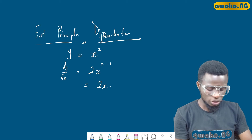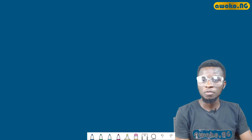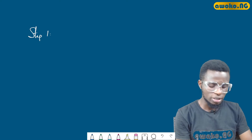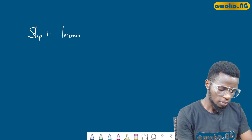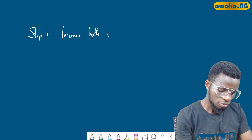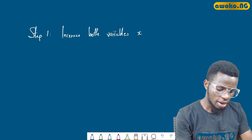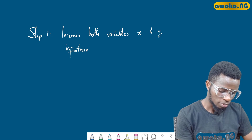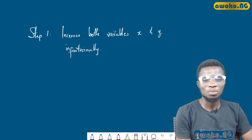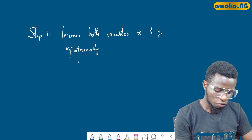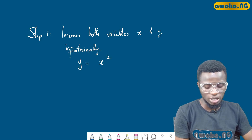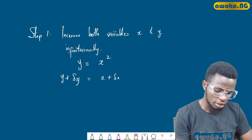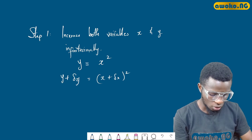Using the first principle differentiation, I'm going to give you some steps you can follow to solving problems on first principles. Step one is to increase both variables x and y infinitesimally, that is using a very small increase or change. So if we have the function y equals x squared, if we increase x and y infinitesimally we have: y plus δy equals (x plus δx) all squared. This is our first equation — let's call this equation one.